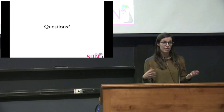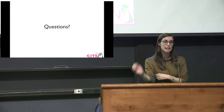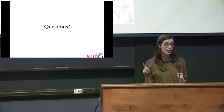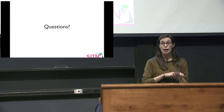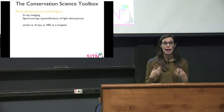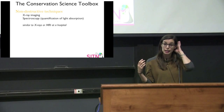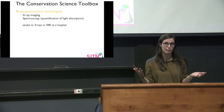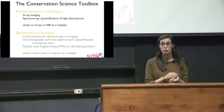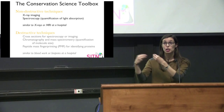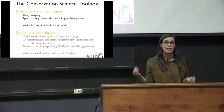Conservation scientists generally break up the tools they use into two categories. One is non-destructive techniques — like if you go to the hospital and get an X-ray or an MRI. With art, we can also do X-ray imaging, and we also use a technique called spectroscopy, which is actually several types of techniques where you can quantify light absorption. The other type is destructive techniques, where — just like if you go to the hospital and they take your blood or do a biopsy — they actually take a piece of the artwork to analyze it.